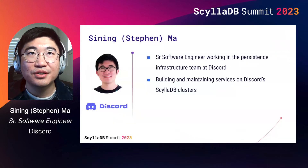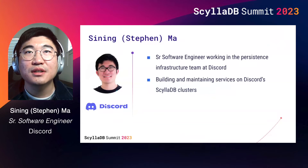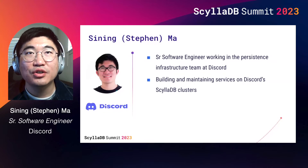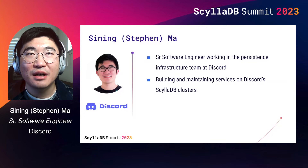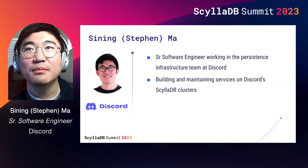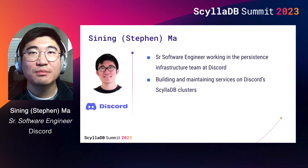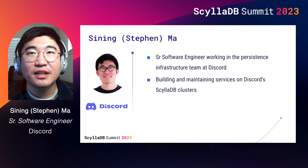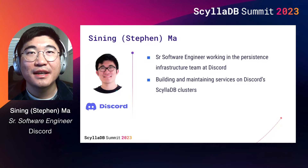I'm a senior software engineer working in Discord's persistence infrastructure team. Discord is a voice, video, and text communication service used by over 100 billion people to hang out and talk with their friends and communities. I joined Discord in 2021 and I'm mainly developing and maintaining backend services on top of CELA DB. The key-key-value store service is a generic NoSQL data store solution, and this service hides many database-specific complexities from developers. Through my presentation, I will use the short name KKV for this service.